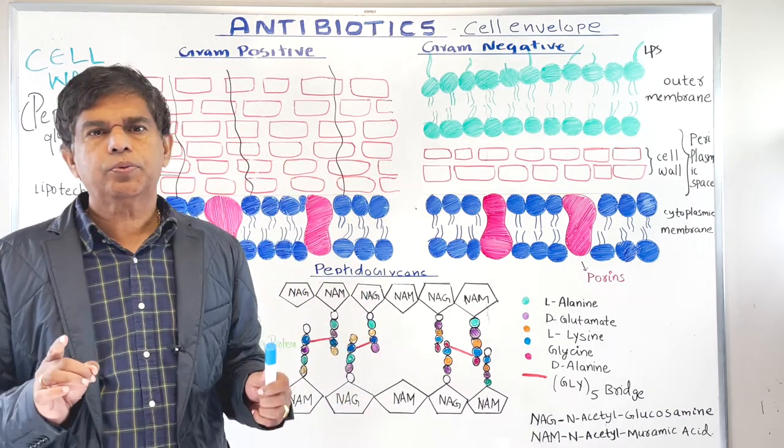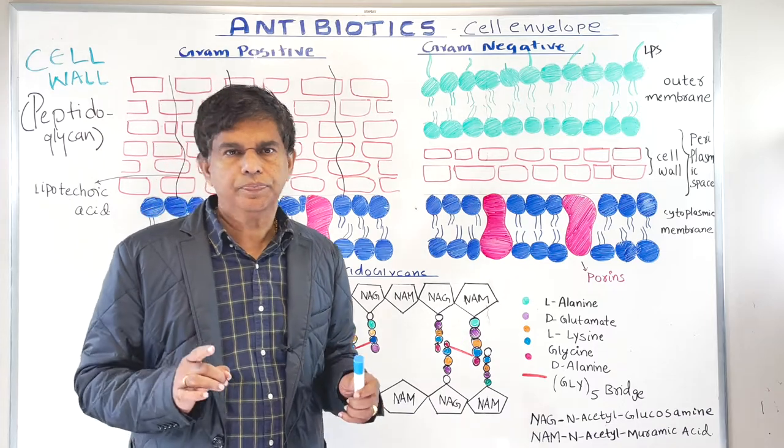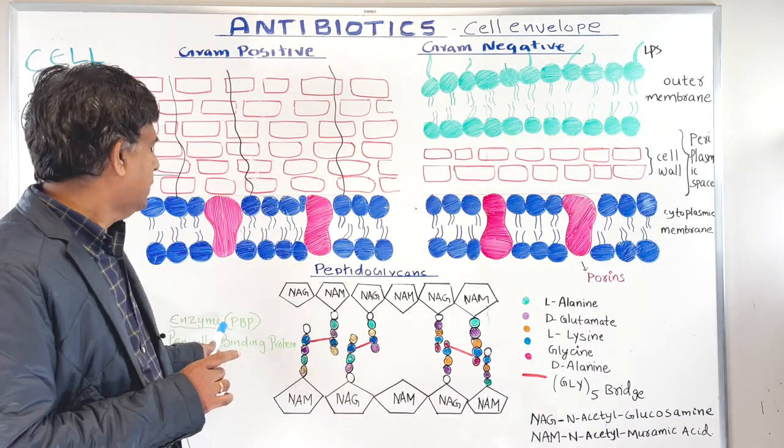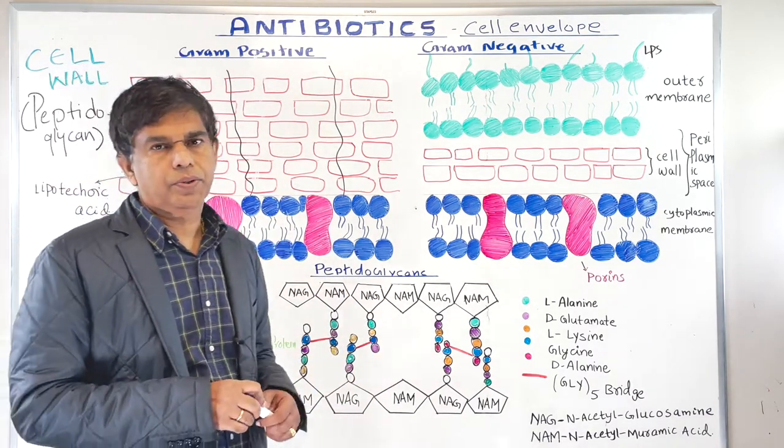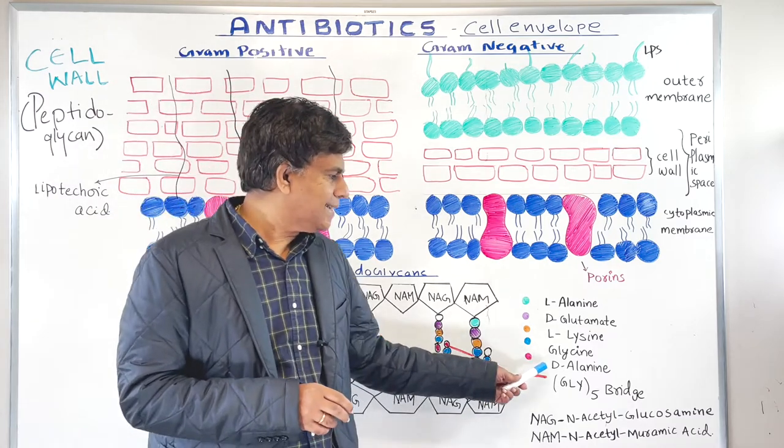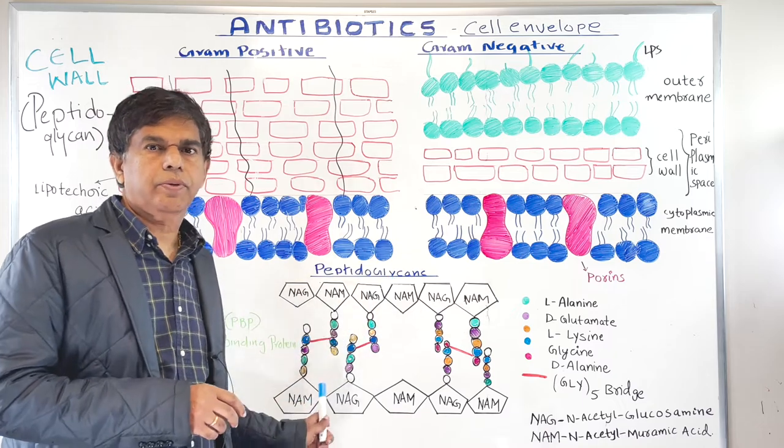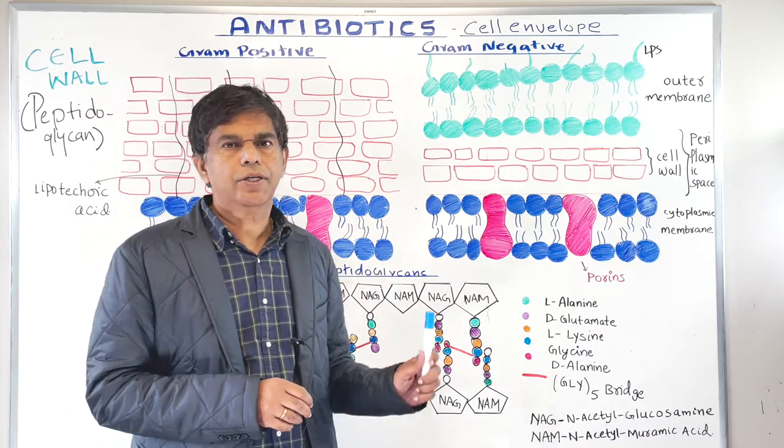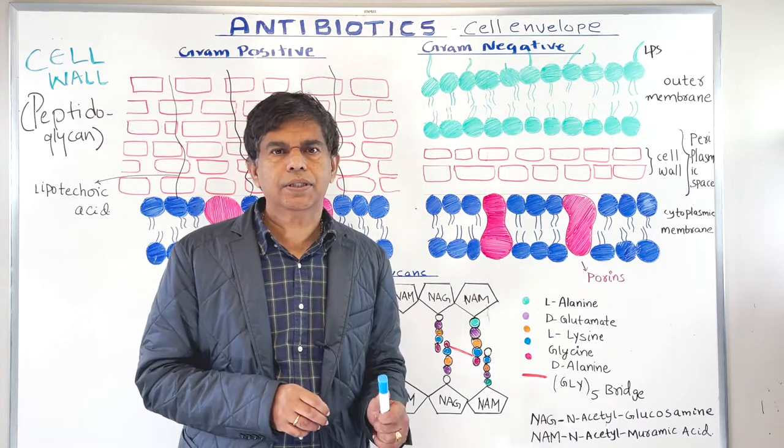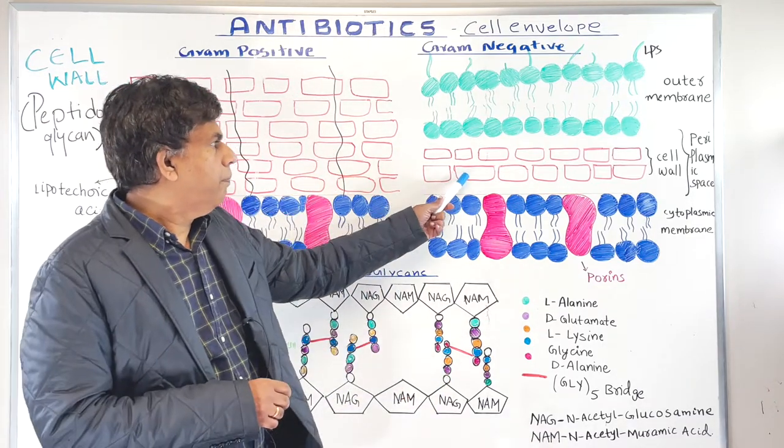Anyway, another important protein plays a very important role. This is called penicillin binding protein. It just kind of binds with this D-alanine and make this whole process, make it smoother. So enzyme, penicillin binding protein enzymes involved. So remember.